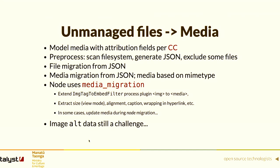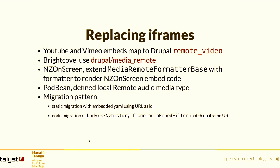Dealing with image alt data is still somewhat of a challenge. There was also a lot of iframes sprinkled throughout the Drupal 7 site — a lot of YouTube and Vimeo embeds, which we could map in Drupal 10 using the remote video module. For Brightcove we used Drupal Media Remote, which gave us a plugin structure we extended for other external content not available in contrib. That included things like New Zealand On Screen and Podbean for remote audio and podcasts.